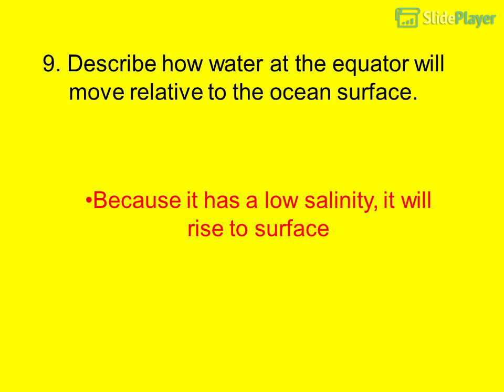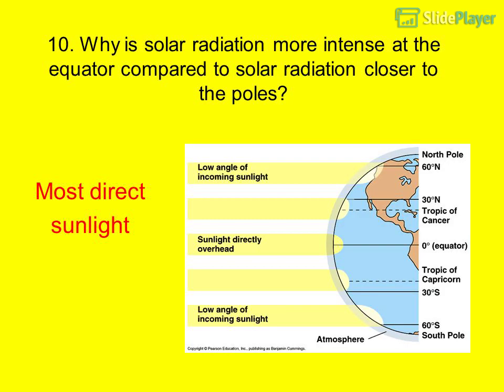Question 10: Why is solar radiation more intense at the equator compared to solar radiation closer to the poles? The sunlight is most direct at the equator.